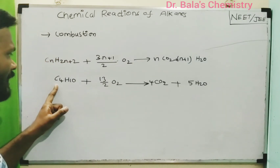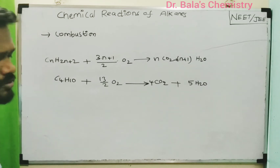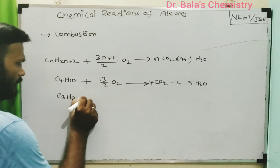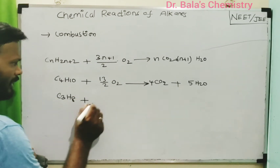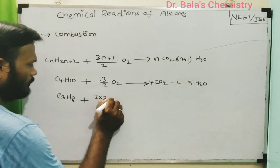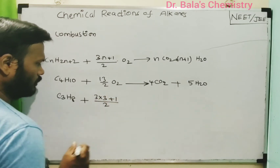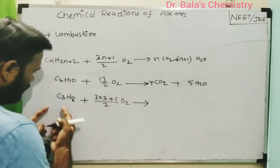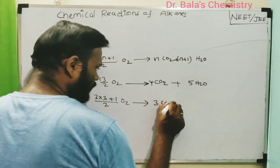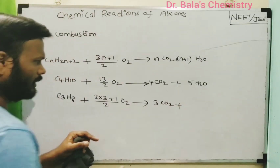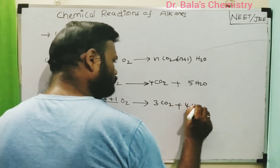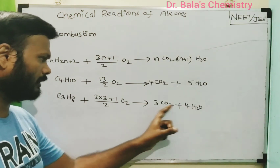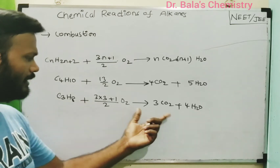How do we balance the equation? For example, take C3H8. n=3, so oxygen = (3×3+1)/2 = 10/2 = 5 moles of oxygen. The number of CO2 is n=3, so 3 moles of carbon dioxide. And n+1 = 4 moles of water. Now we need to balance the equation by checking carbon, hydrogen, and oxygen counts.